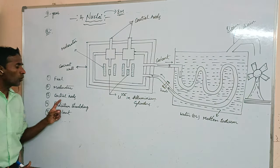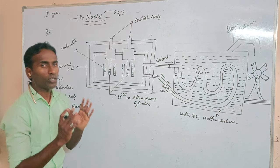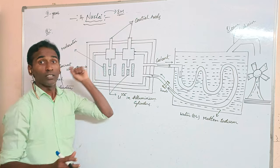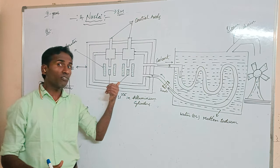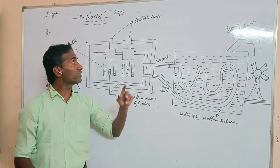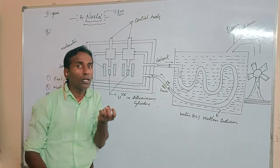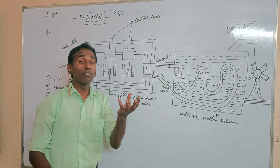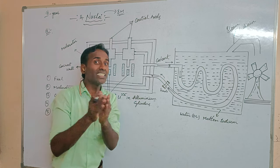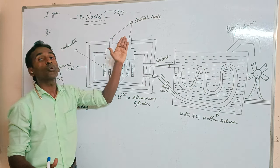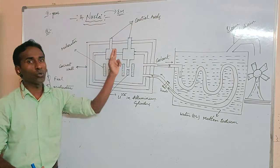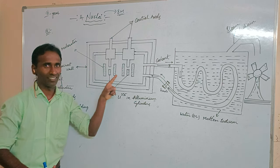Third feature is control rods. When the fast-moving neutrons are slowed down by the moderator, the control rods absorb those neutrons. Why? To control the chain reaction. That's why we use control rods in the nuclear reactor.